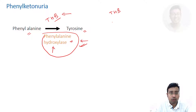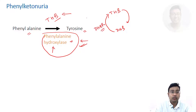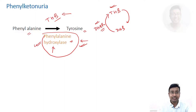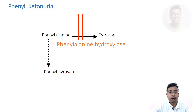Tetrahydrobiopterin is the cofactor. It is converted to dihydrobiopterin by this reaction and again it requires NADPH to be regenerated. This enzyme is also known as dihydrobiopterin reductase. So either deficiency of tetrahydrobiopterin, or deficiency of dihydrobiopterin reductase, or majorly deficiency of phenylalanine hydroxylase can all lead to phenylketonuria. These are the causes of phenylketonuria.